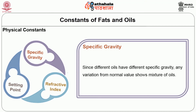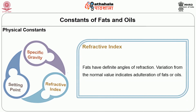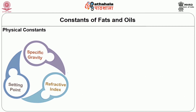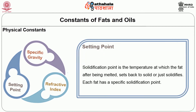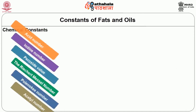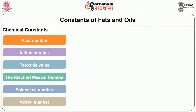A very important physical constant is specific gravity — different oils have different specific gravities. The refractive index is another constant: every fat has a definite angle of refraction depending upon its constituent fatty acids. A variation from the normal refractive index value for a given fat indicates adulteration — a simple test that can reveal whether a fat or oil has been adulterated. The solidification point or setting point is the temperature at which a melted fat solidifies again; each fat has a specific solidification point.